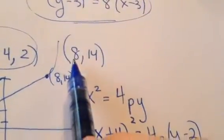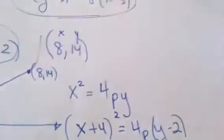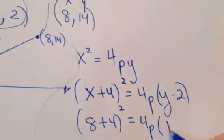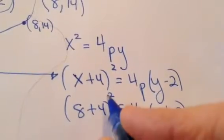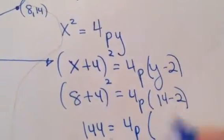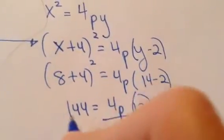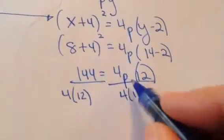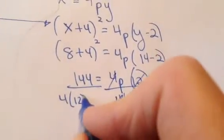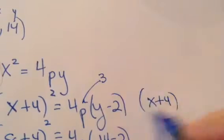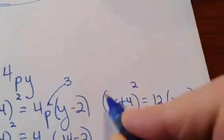Since I know (8, 14) is a point on the graph, I plug in x equals 8 and y equals 14. That gives (8 plus 4) squared equals 4p times (14 minus 2), which is 12 squared equals 4p times 12, so 144 equals 48p. Divide both sides by 48: p equals 3. So go back and plug in 3. My final answer is (x plus 4) squared equals 12(y minus 2).